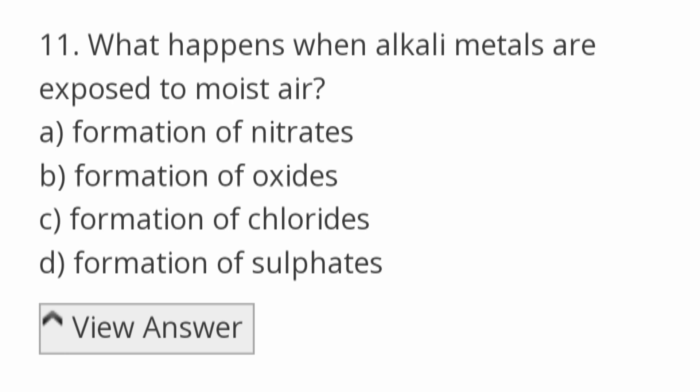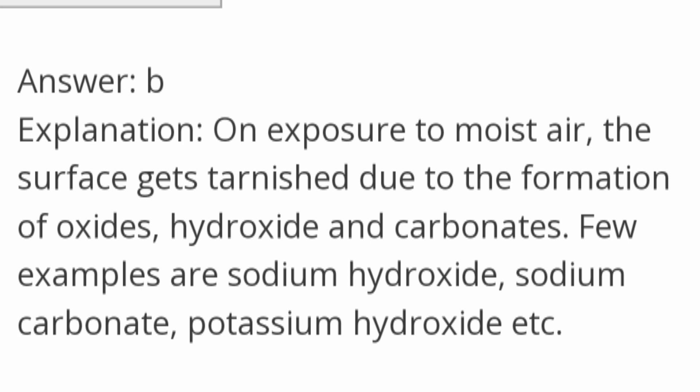What happens when alkali metals are exposed to moist air? Options: formation of nitrates, formation of oxides, formation of chlorides, formation of sulfates. Answer: formation of oxides. On exposure to moist air, the surface gets tarnished due to the formation of oxides, hydroxides, and carbonates. Examples include sodium hydroxide, sodium carbonate, and potassium hydroxide.